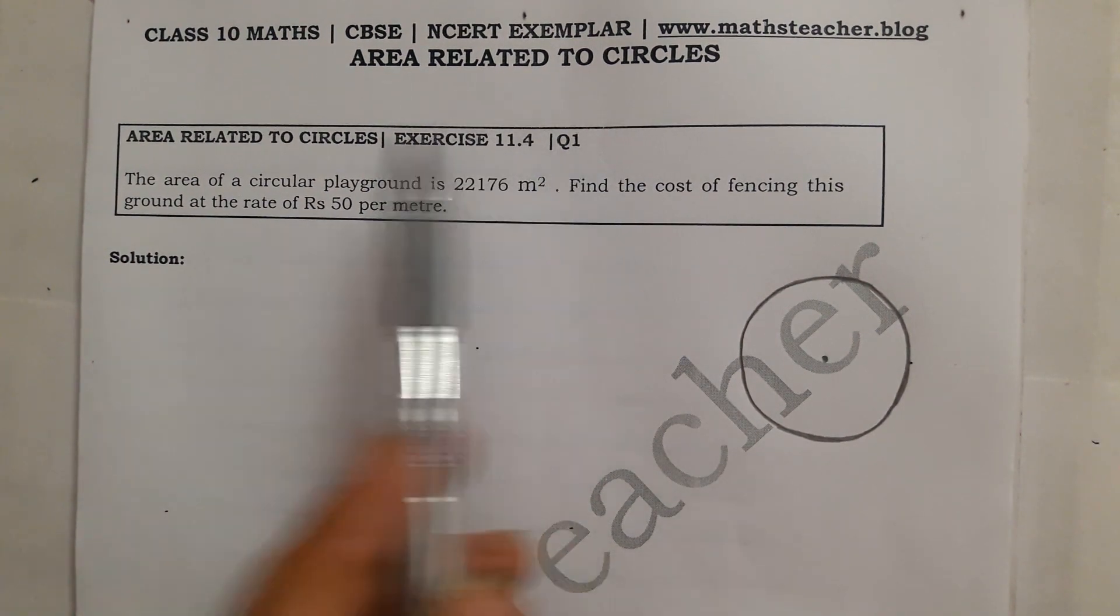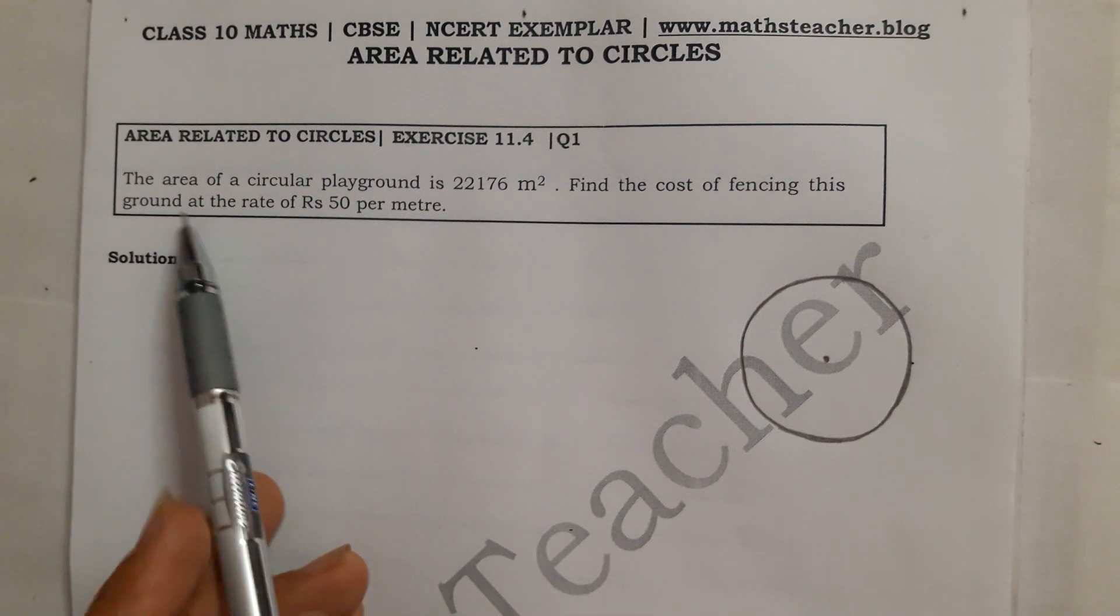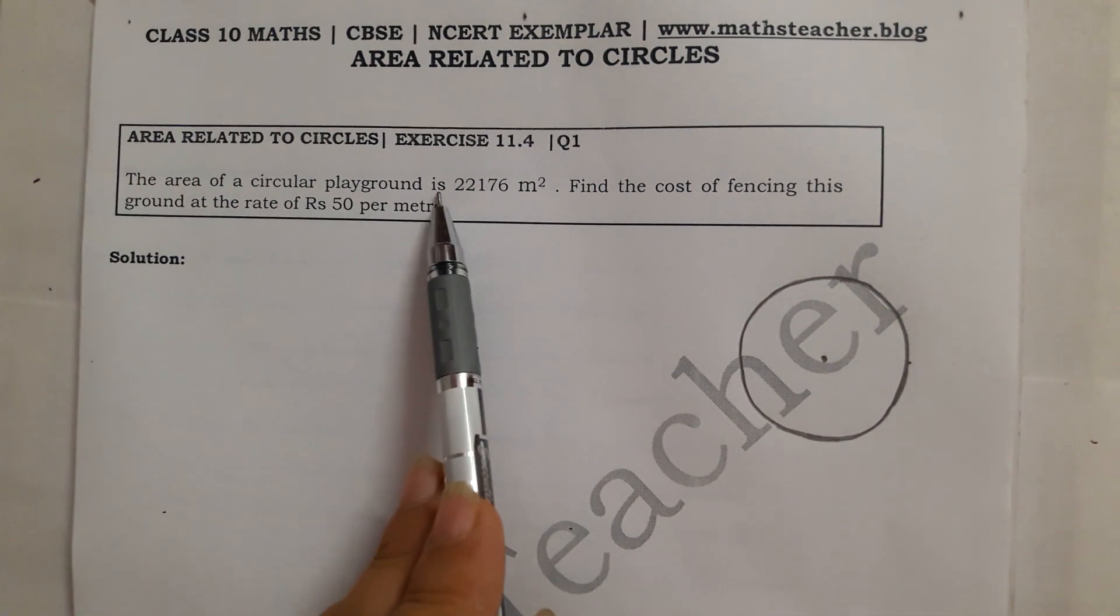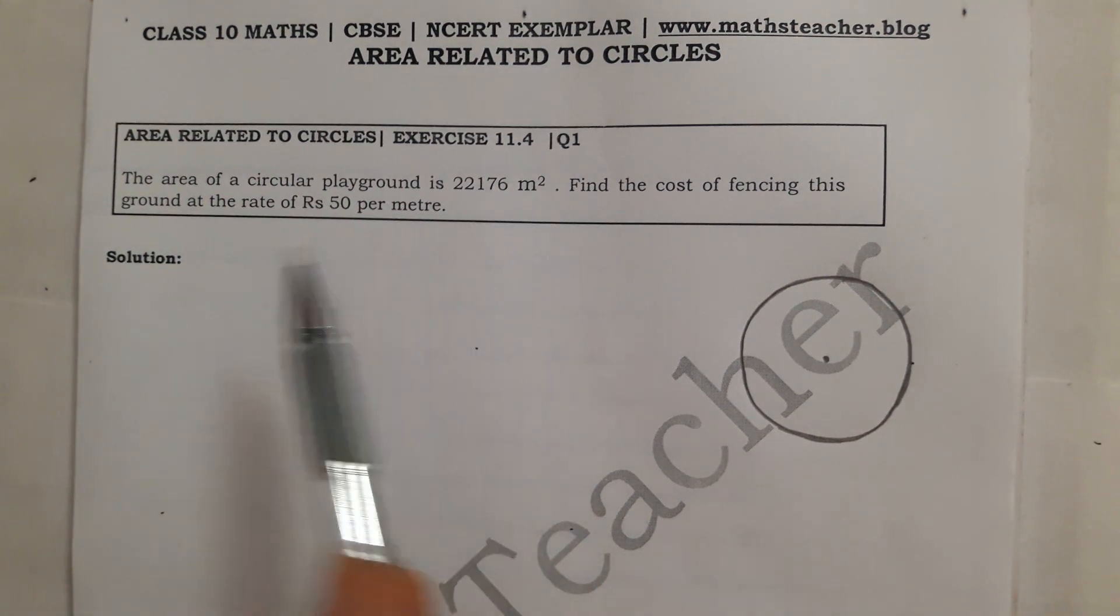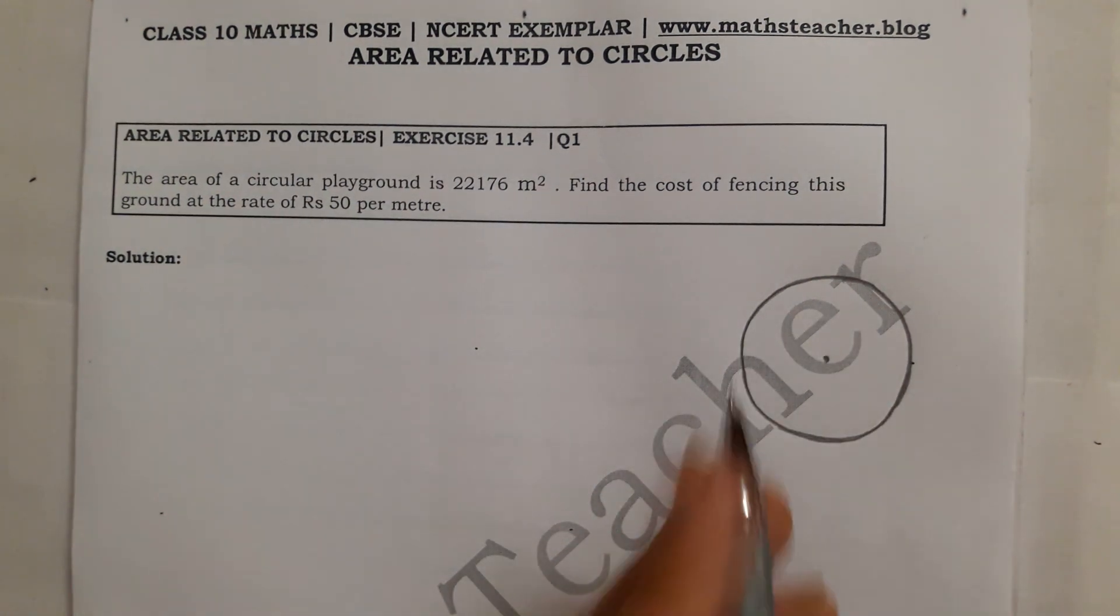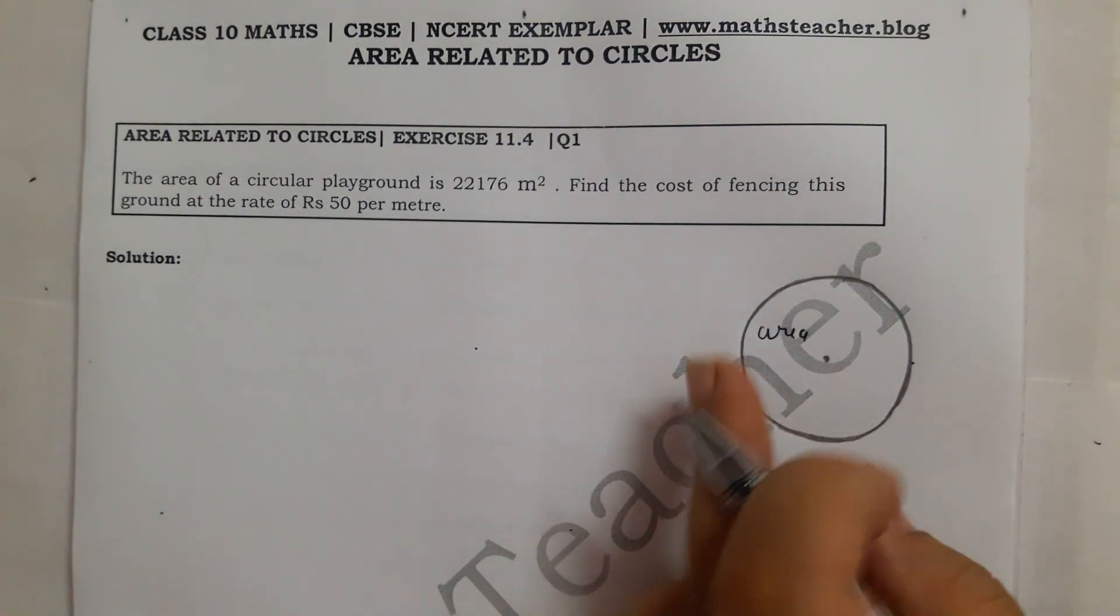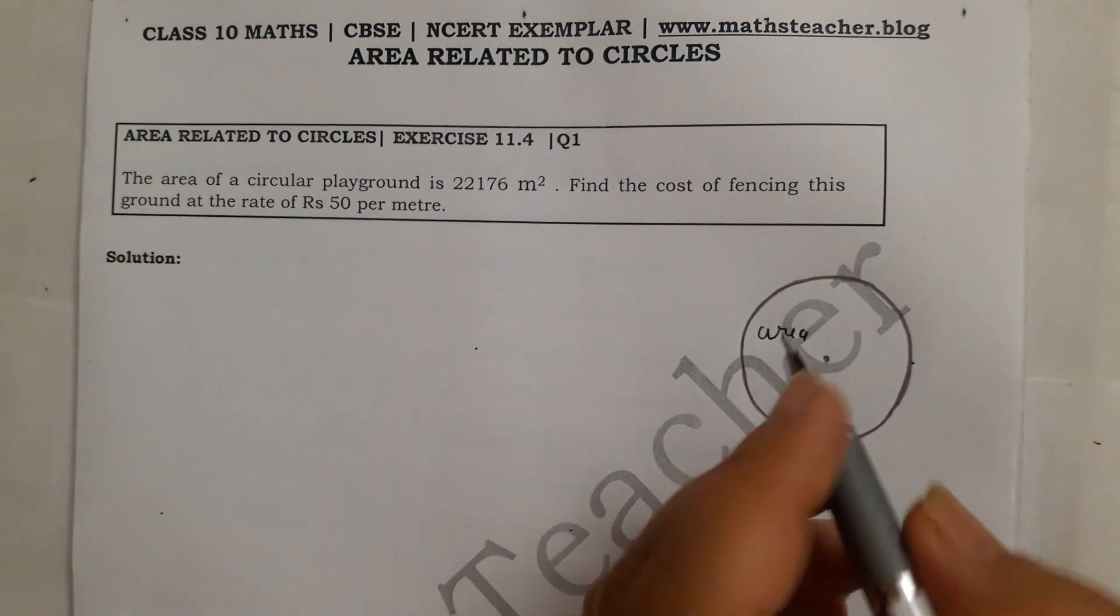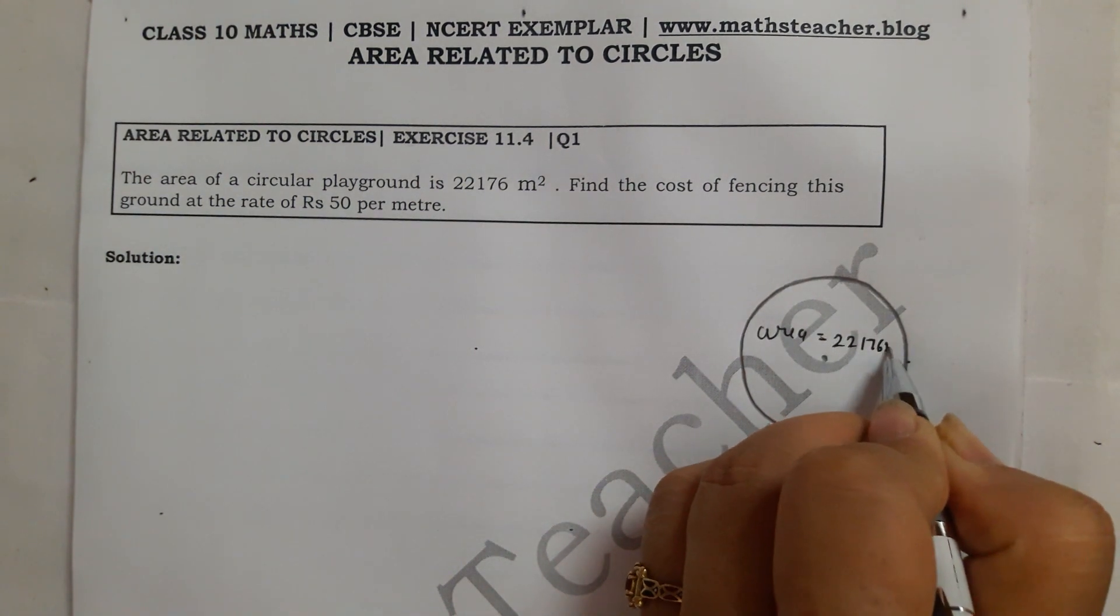Area related to circles, question number 1. The area of a circular playground is 22,176 meters square. It means that it is a circular playground and its area is given - area is 22,176 meters square.